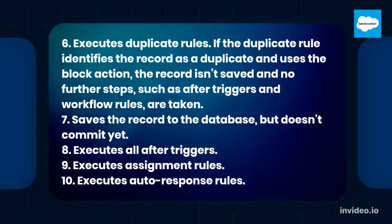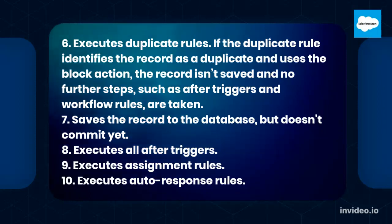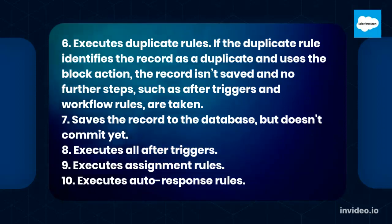Step 6: Executes duplicate rules. If the duplicate rule identifies the record as a duplicate and uses the block action, the record isn't saved and no further steps, such as after triggers and workflow rules, are taken.